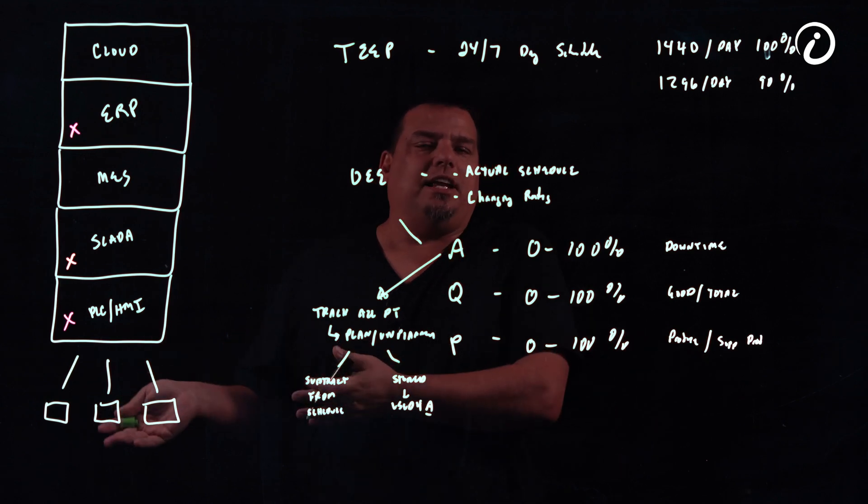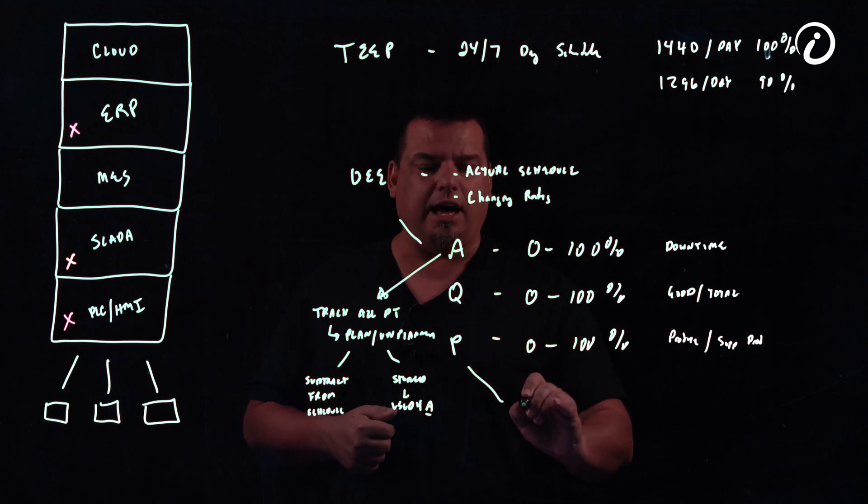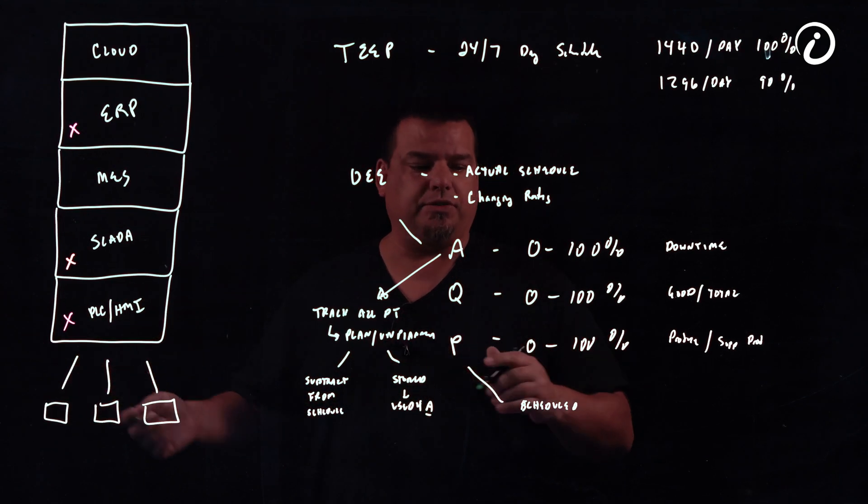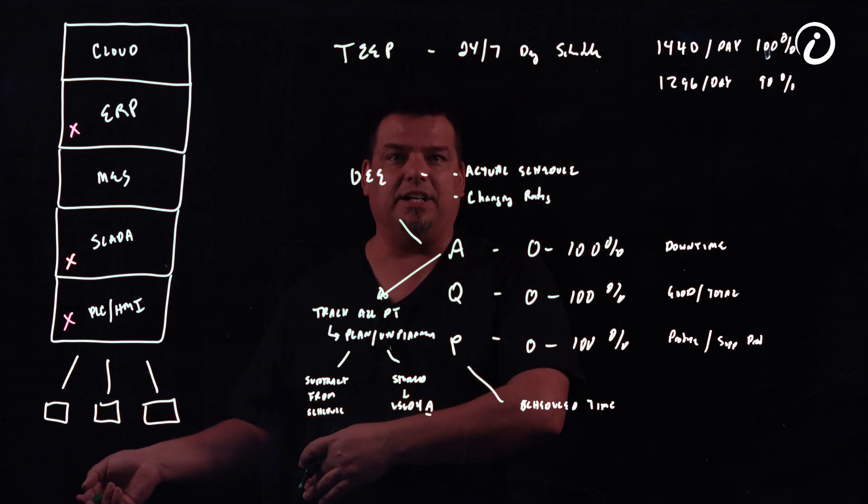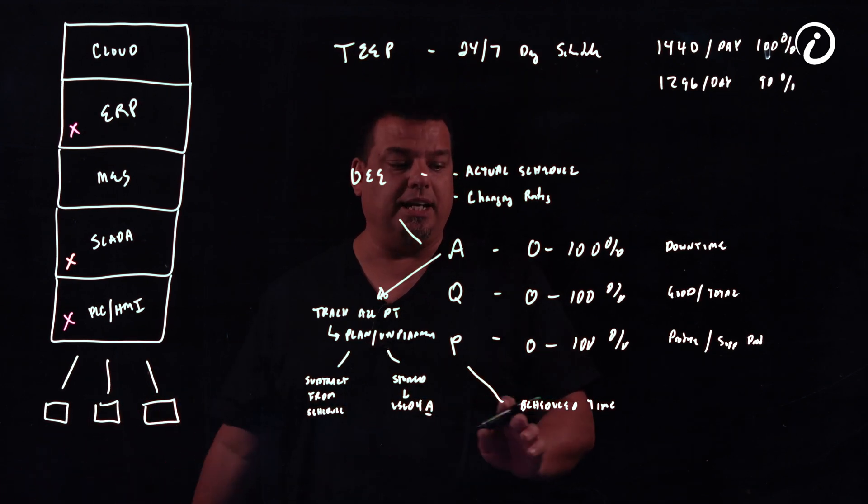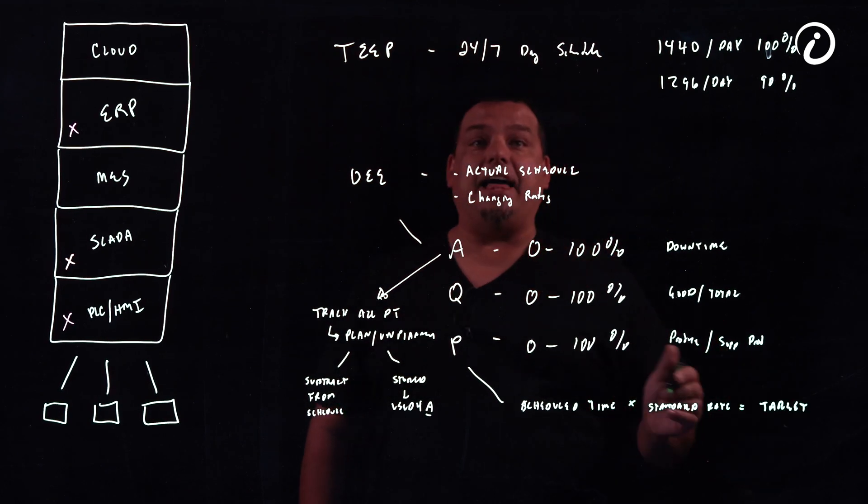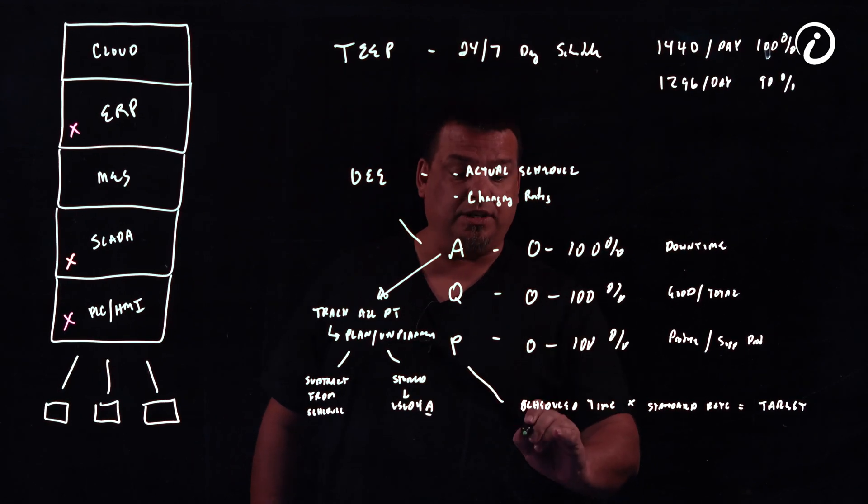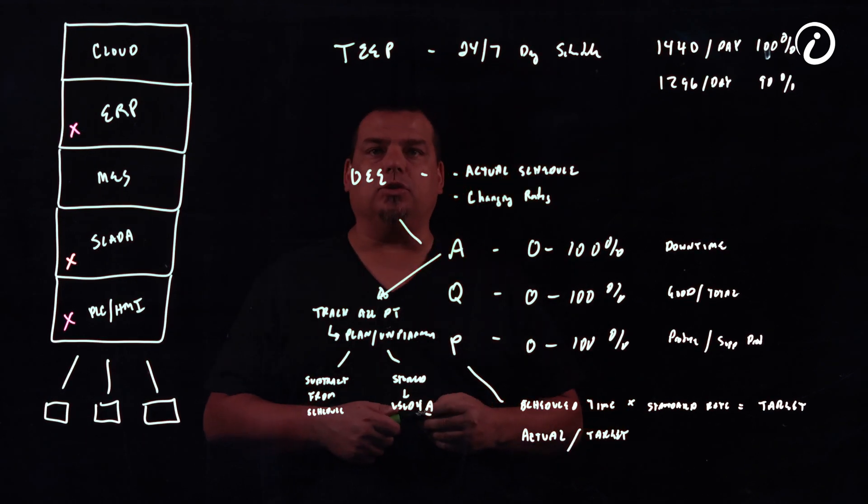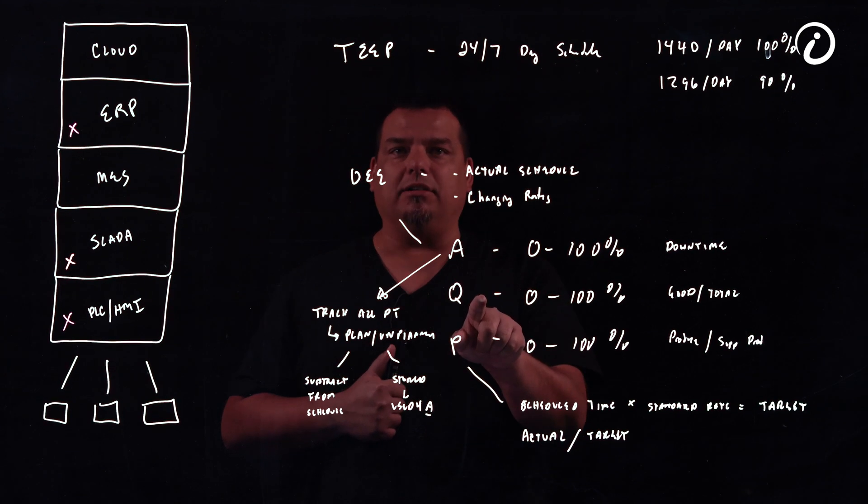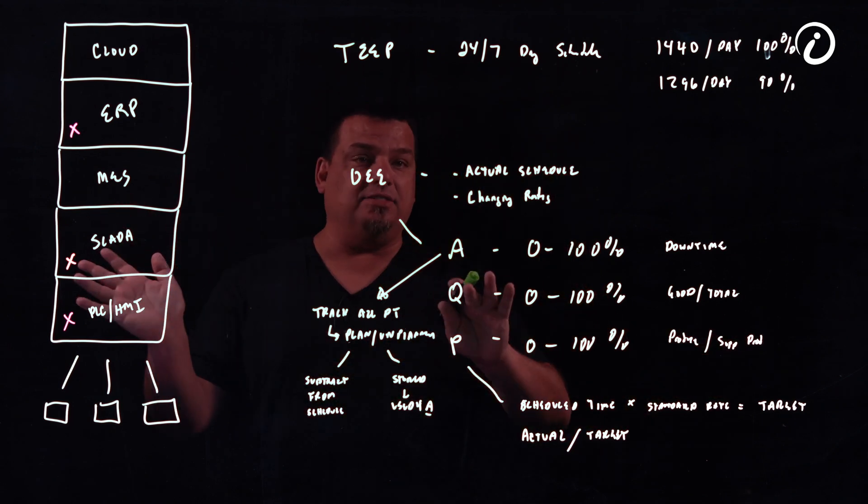Getting that number is not always easy. Knowing whether it's planned or unplanned is not always easy. Quality is always the easiest one to calculate—what percentage of the parts that I produced were good parts. Performance is another really hard one. Performance takes into account a scheduled time, but remember that number is always moving based on planned downtime events. As I accrue downtime, planned downtime events during the shift, it gets subtracted from the scheduled time. Scheduled time times standard rate equals our target. To calculate performance, we divide actual—that is what did we actually produce—divided by what our target was. Actual includes good and bad parts. Bad parts are only ever applied to the quality number. Good and bad parts go to the performance number.